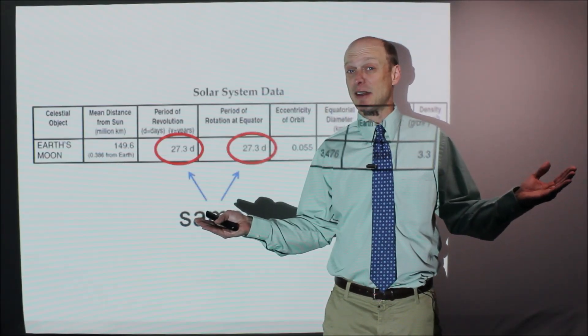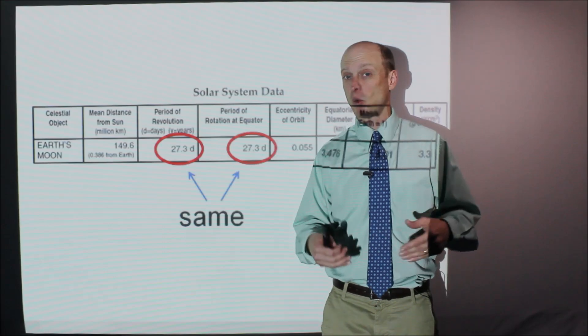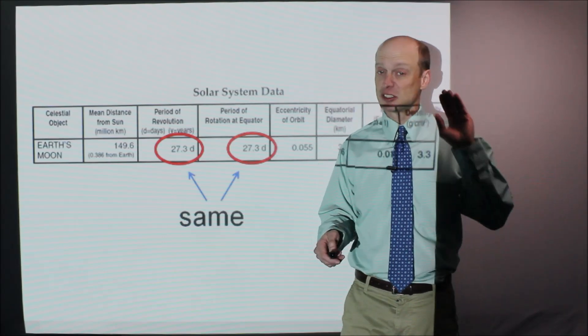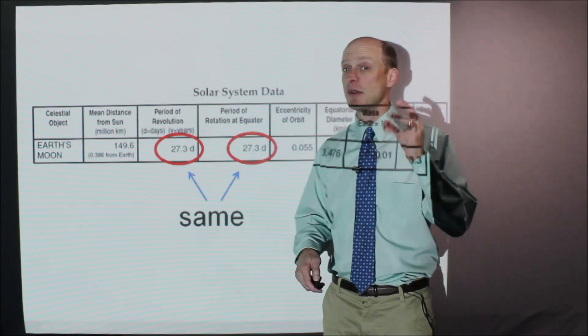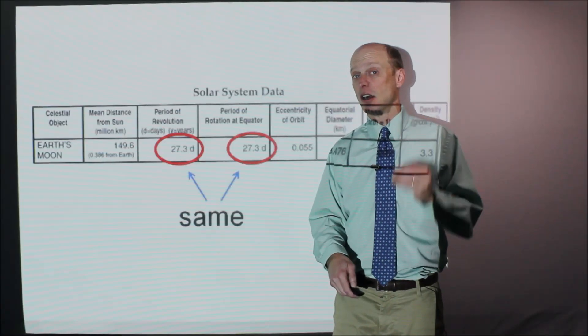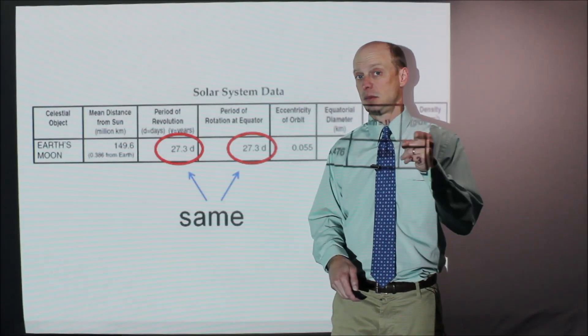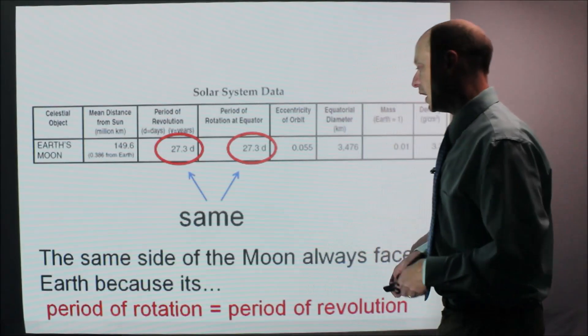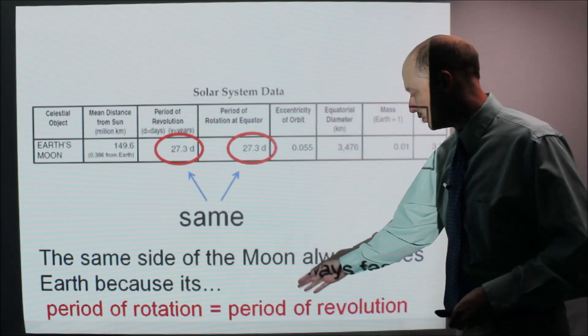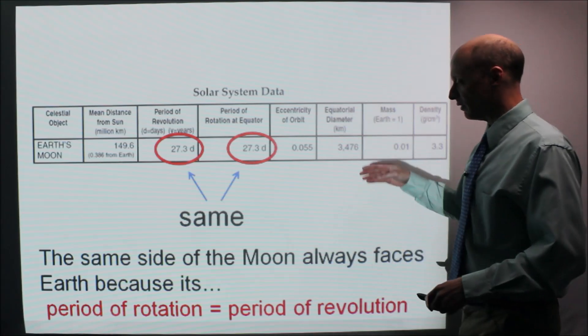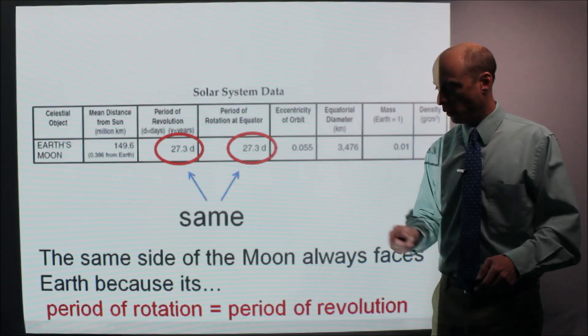That's like if our year and our day wasn't the same. I'm not going to get too much into the detail of it, but just know that that is the reason why we always see the same side of the moon. Know it. And here we go. Because the period of rotation equals the period of revolution. That is important.